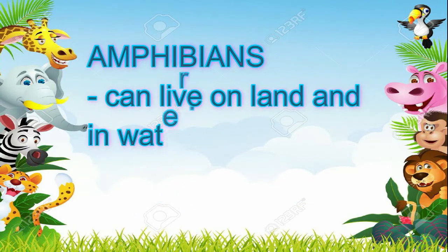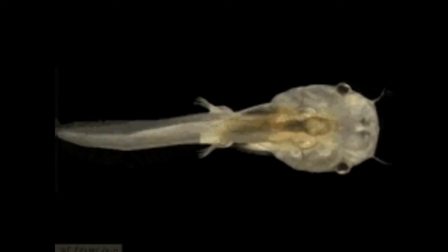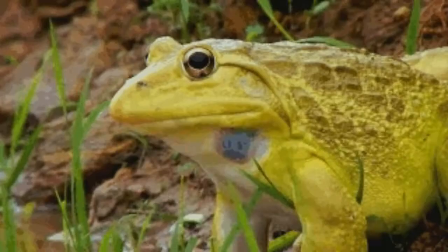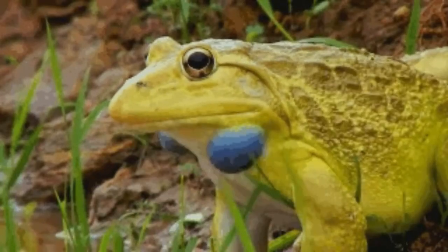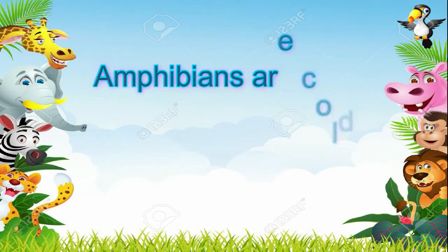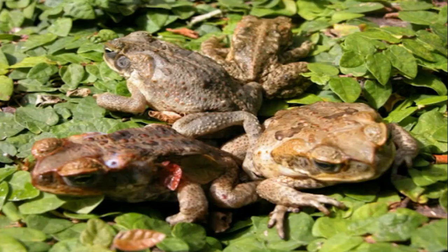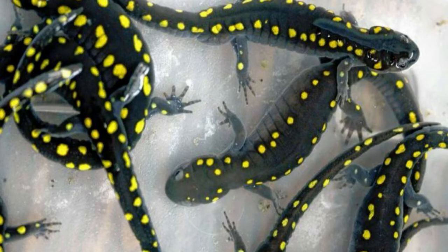Amphibians can live on land and in water. As they grow, their gills disappear and are replaced by lungs. They take in oxygen in two ways — either through the lungs or through the skin. Amphibians are cold-blooded animals. Frogs, toads, and salamanders are the most common amphibians.